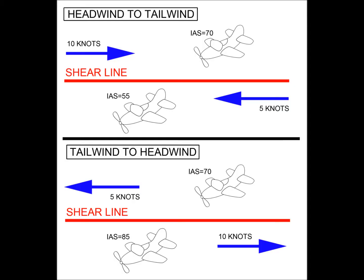Wind shear is defined as a change in wind speed and/or direction over a relatively short distance. Many atmospheric conditions can cause wind shear. The pilot should become familiar with these causes and ways in which to identify the potential for wind shear.